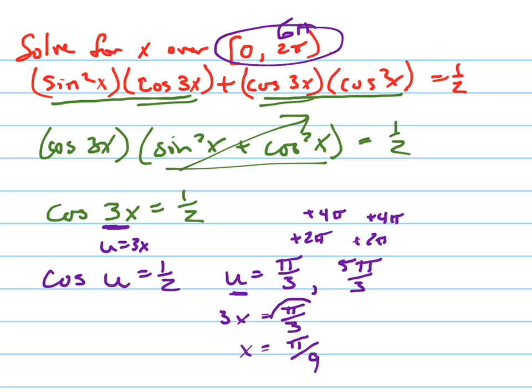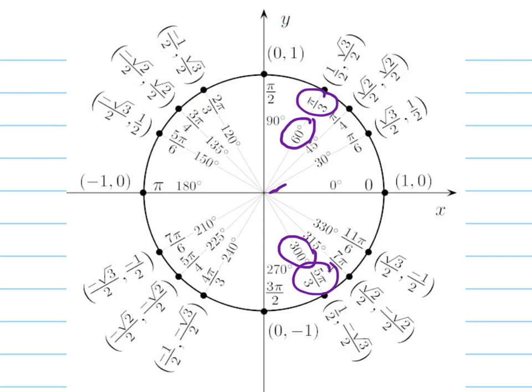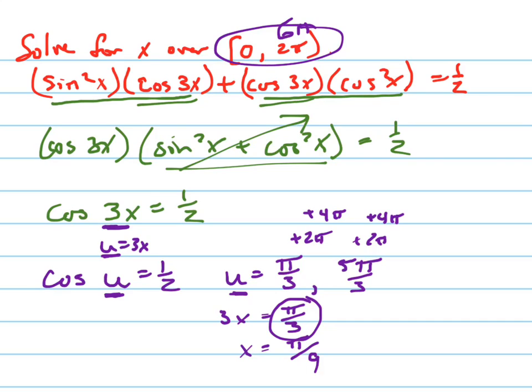So, in other words, π over 3 was what u equaled, but what did x really equal? It equals π over 9. And where's π over 9 at? It's right here. So, I'm barely started. What happens when I divide this by 3? I get 5π over 9.